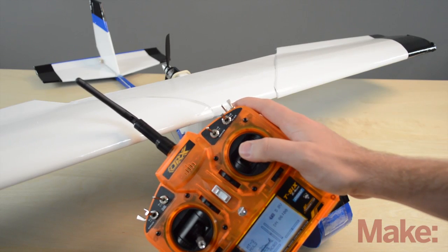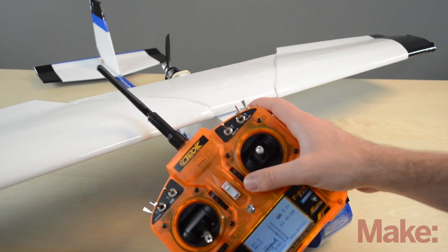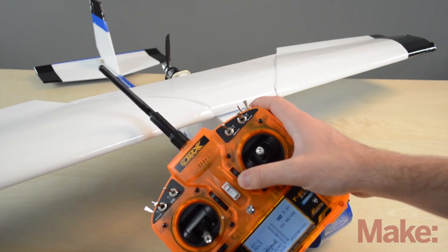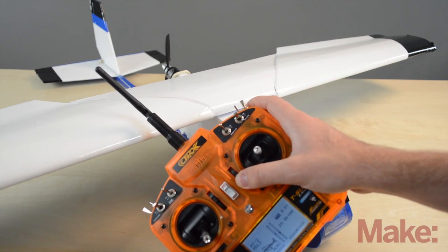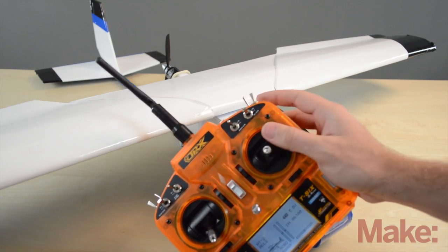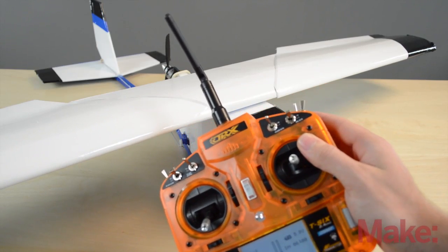So it's just like you holding the stick down like here. And when you're trimming out in the air, you can incrementally add these to make the plane just fly straight when you let go of the controls, which is what you want.